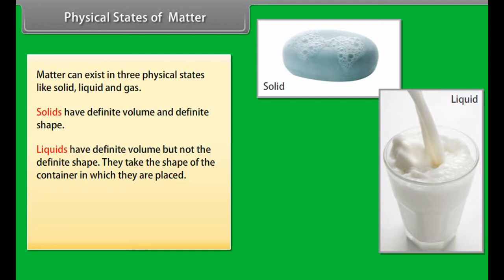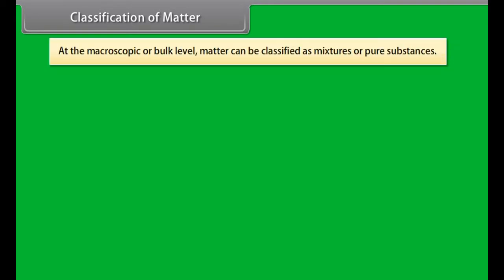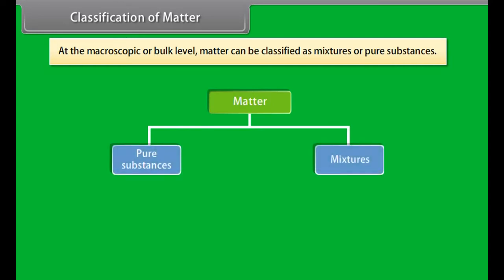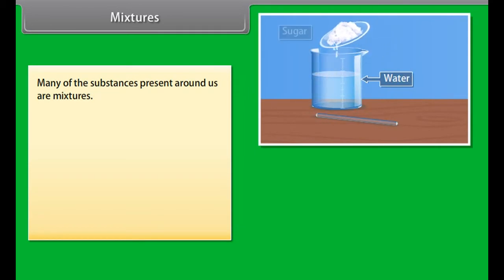Nature of Matter: Matter is any material substance with mass and volume. Everything around us, for example, books, pens, pencils, water, air, all living beings, etc., are composed of matter.